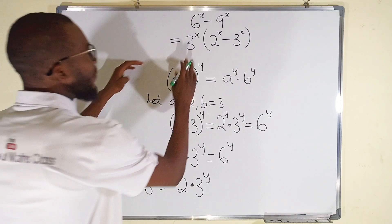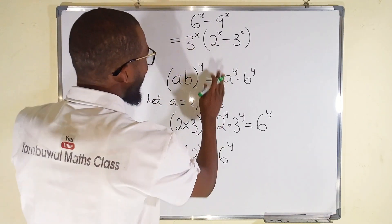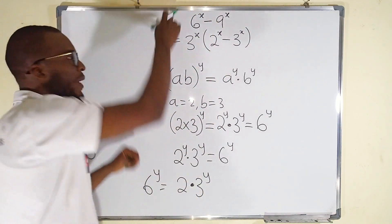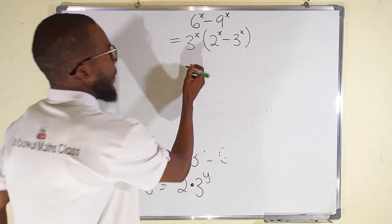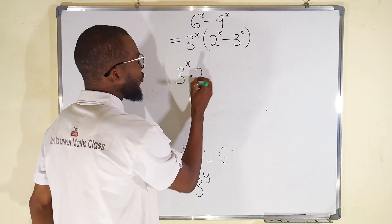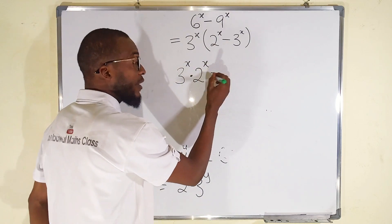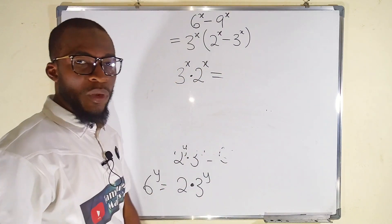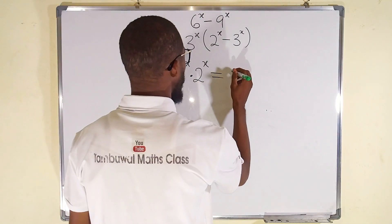Likewise, if you take this and multiply by this, let's see whether we get this back. If we say 3^x multiplied by 2^x, from that law we can give them a single power. So this equals...